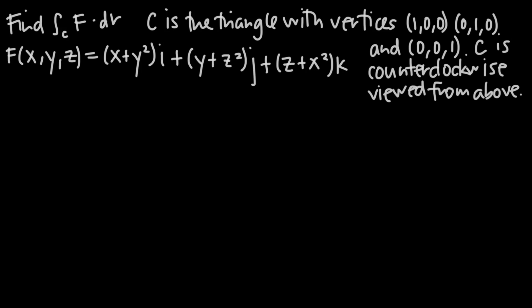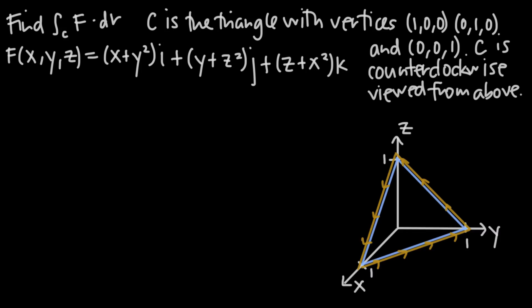Now we're going the other way with Stokes' Theorem. This time we've been asked to find the line integral side, so we'll use the surface integral side. We've been told that curve c is the triangle with vertices (1,0,0), (0,1,0), and (0,0,1), and that c is counterclockwise when viewed from above. We're up here looking down and c is counterclockwise — that's the orientation we want for the boundary curve c.